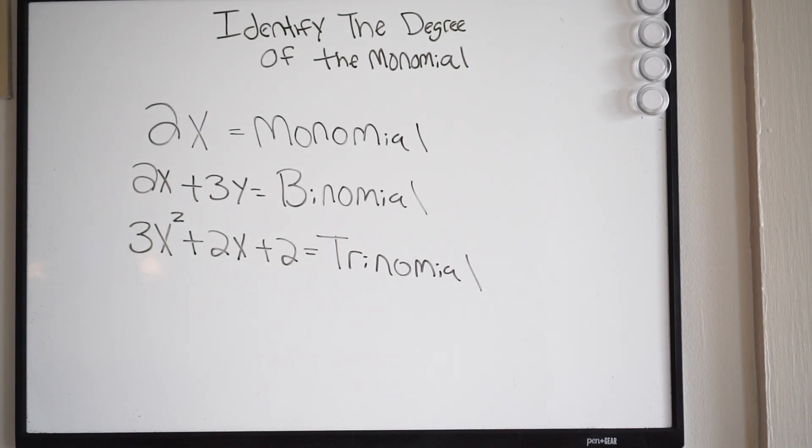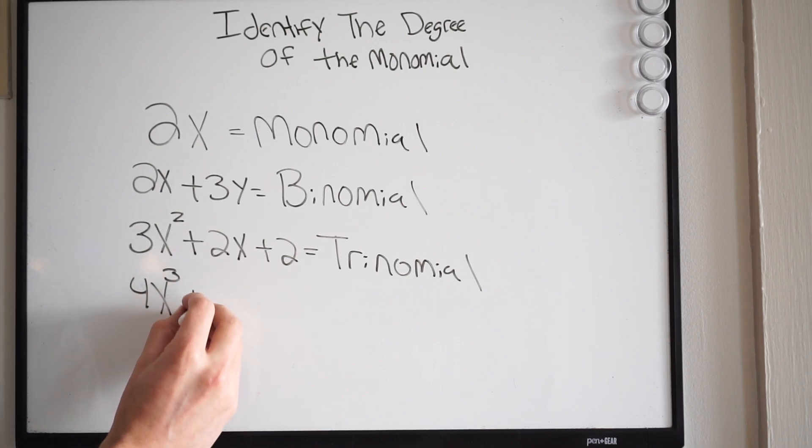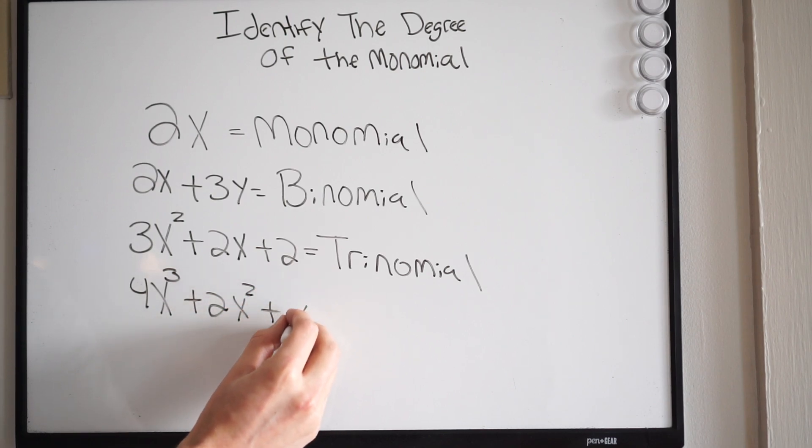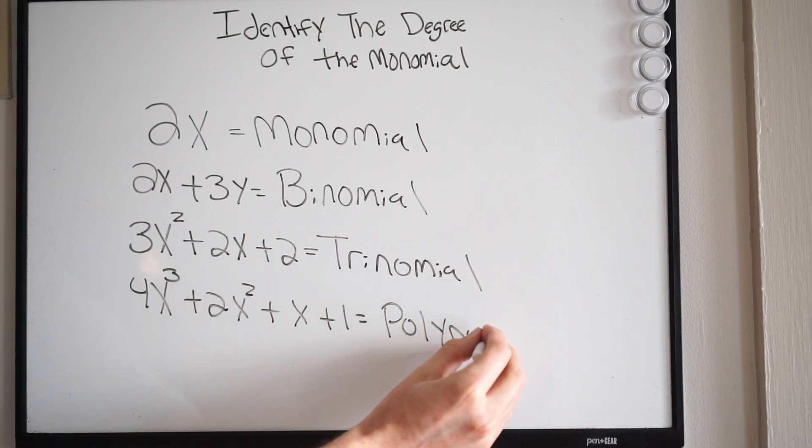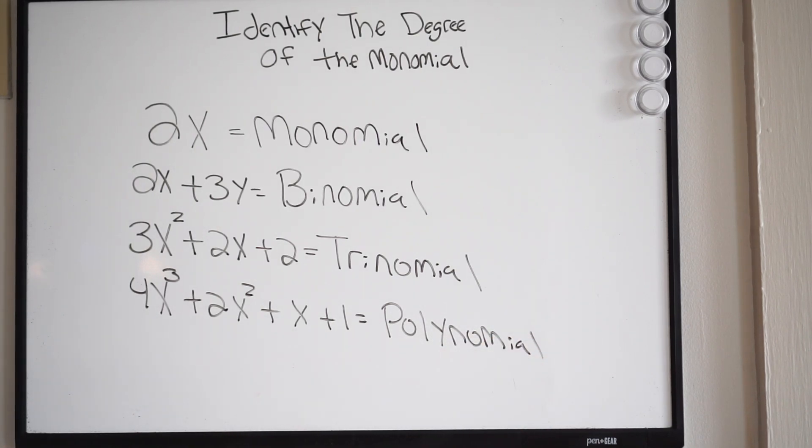Okay, and then if we have more than three terms, anything more than three terms, we call a polynomial. Alright, so let's say we have 4x cubed plus 2x squared plus x plus 1. This would be called a polynomial.